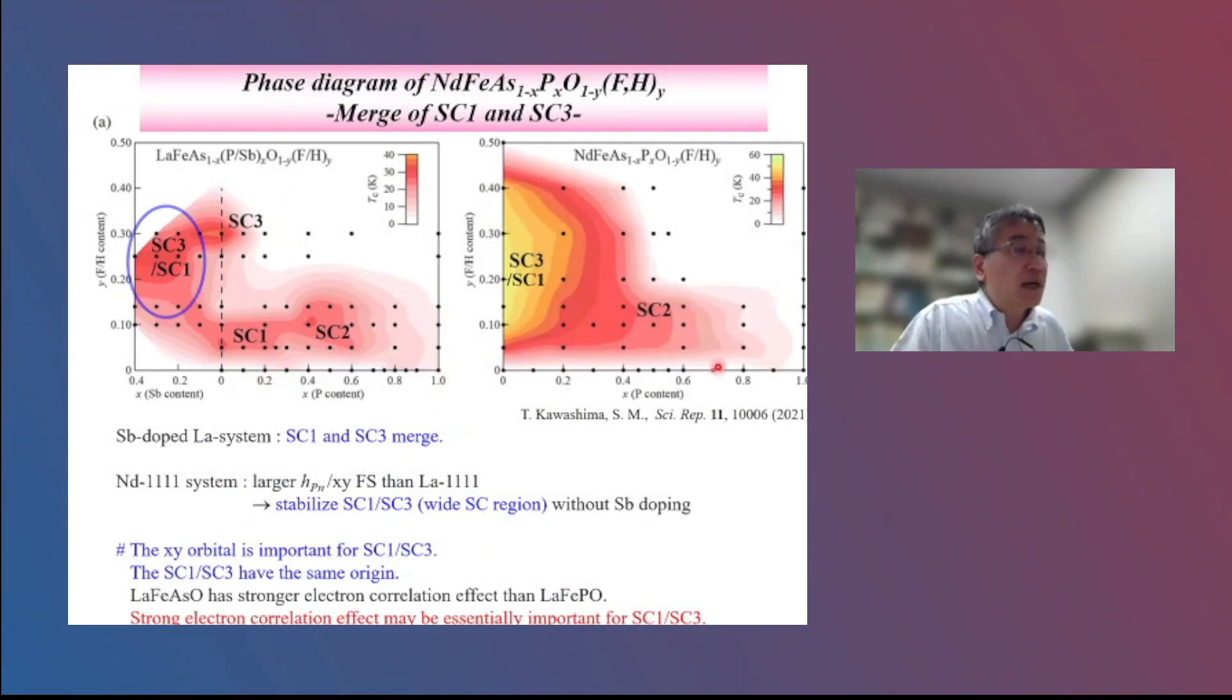The right panel shows a phase diagram of neodymium, sorry, phosphorus and fluorine or hydrogen doping in neodymium 1111 system. Neodymium 1111 system has a larger HPN value and a larger XY Fermi surface than lanthanum 1111 system. So, in this system, AFM1 and SC3 phases are stabilized without antimony doping. And there is a wide superconducting region like this. This result indicates that the XY orbital is important for AFM1 and SC3 phase. And these AFM1 and SC3 phases have same origin.